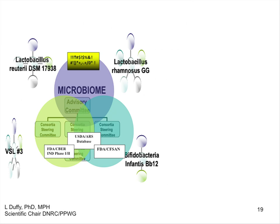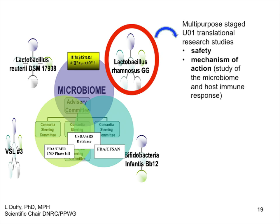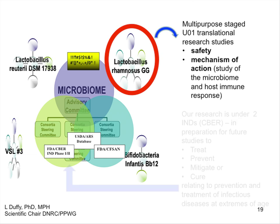I'd like to thank Dr. Duffy, who's my program officer, who provided this slide explaining how the microbiome project relates to the particular work that we are doing. We're here — I work with the probiotic Lactobacillus rhamnosus GG, which is one of the multi-purpose stage U01 translational studies. We are focusing on use of omics to understand safety and mechanism of action of Lactobacillus GG, which is a very widely used probiotic, yet these details are not well understood.